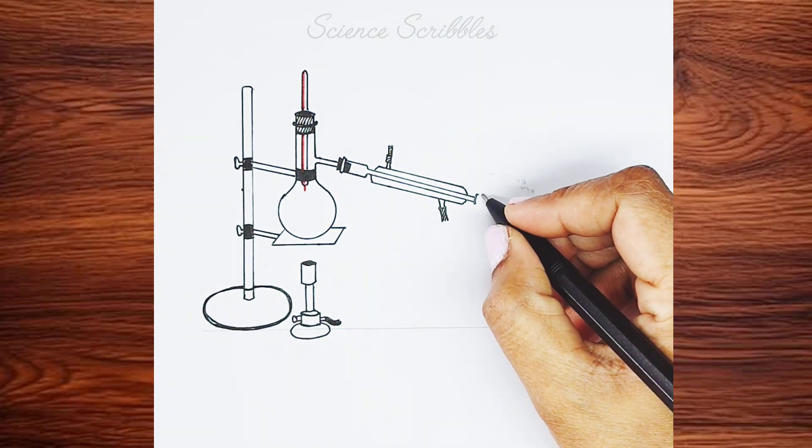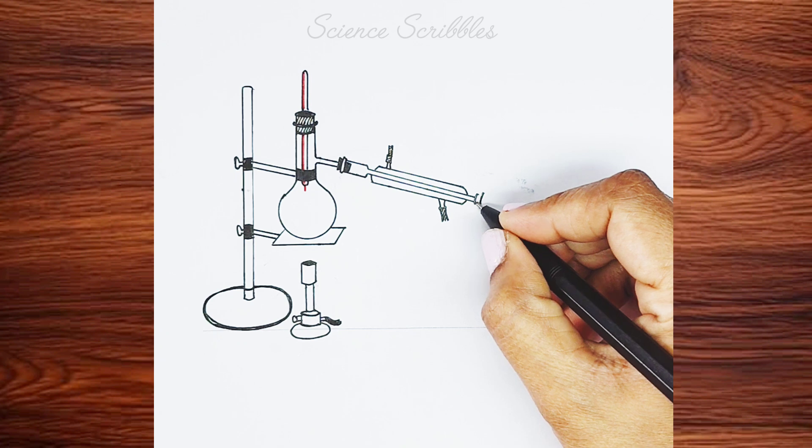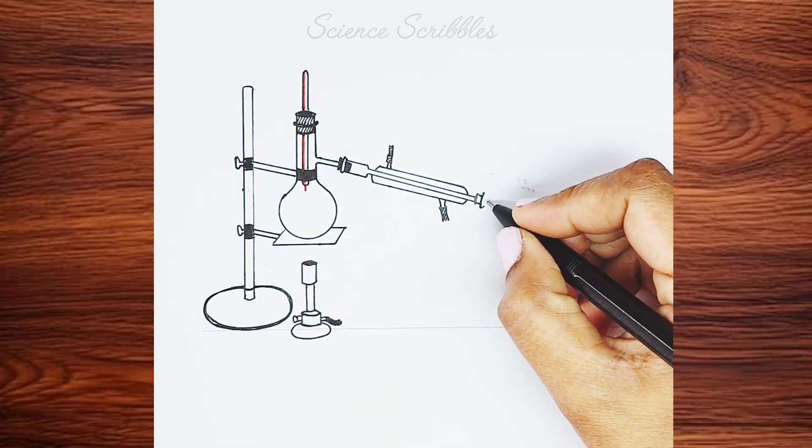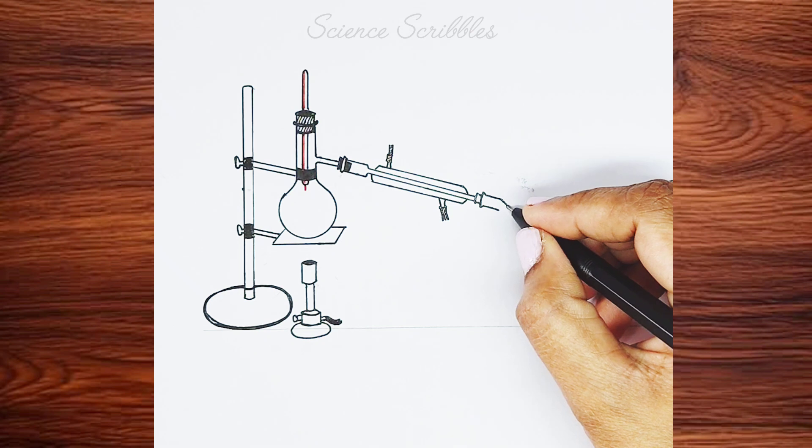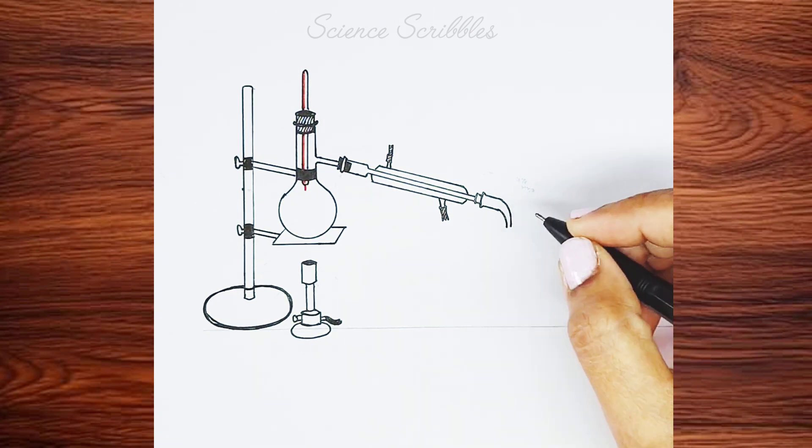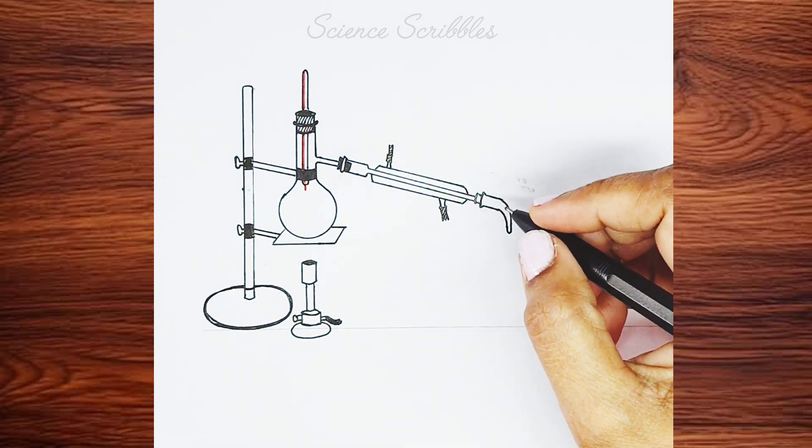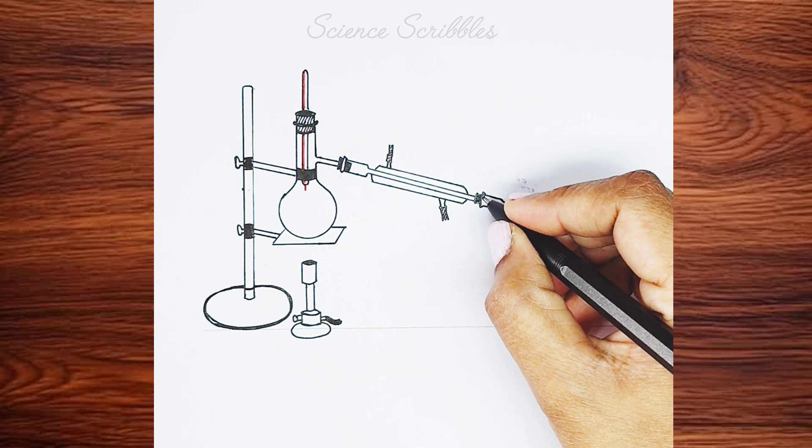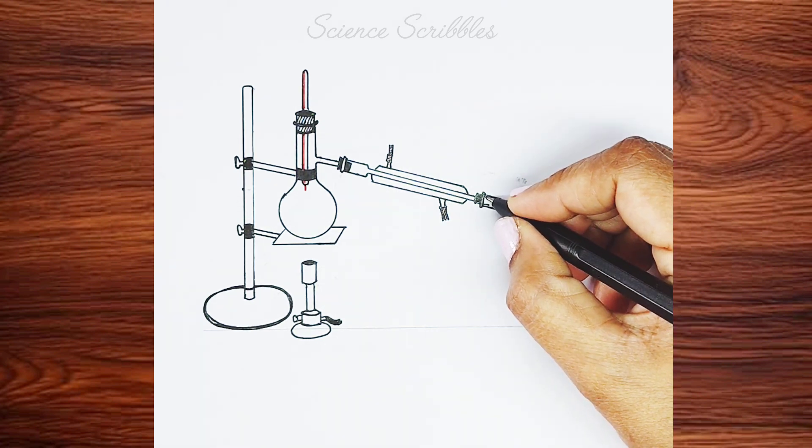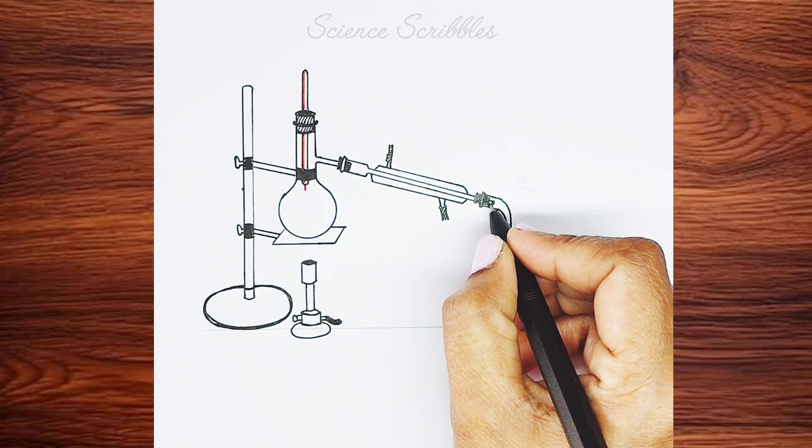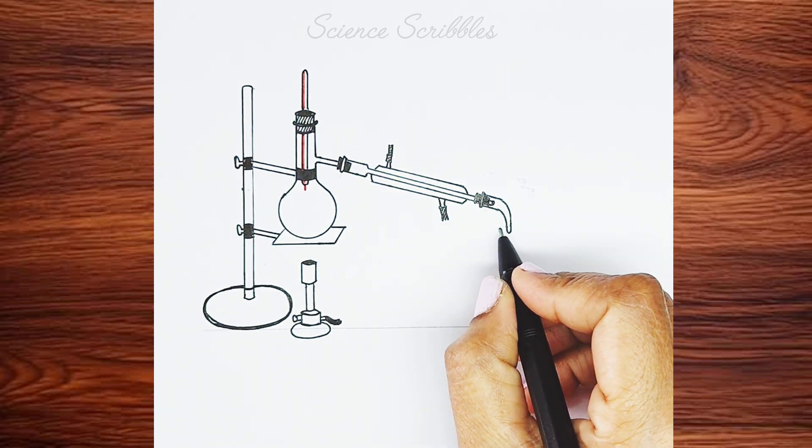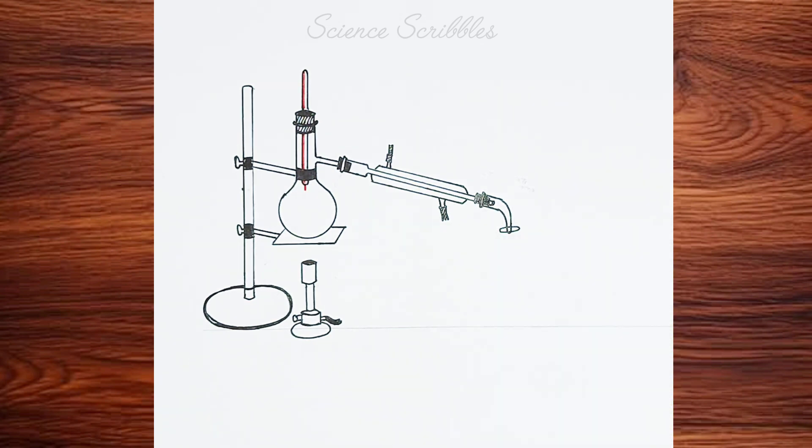This condenser is connected to another small tube, which leads to the collection of distilled water. It looks like a droplet as the collected water will drip slowly, drop by drop. The water will pass through this small tube and fall into the conical flask. Now, let's draw the conical flask. Follow along.